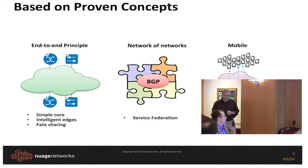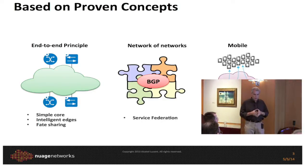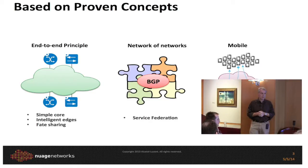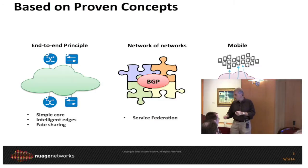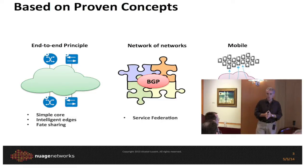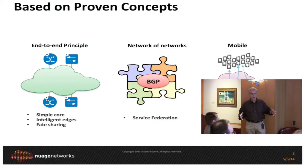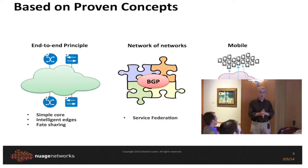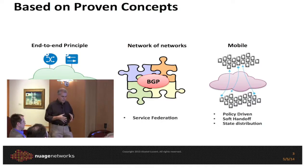From the get-go, in order to build Nuage, we followed three fundamental principles of the internet. The first is the end-to-end principle — the idea of the simple core, intelligent edge. By pushing functionality out to the edge, we can keep the core simple, make the core of the network scale, and get all the scalability properties of the internet without introducing complexity in the hardware.